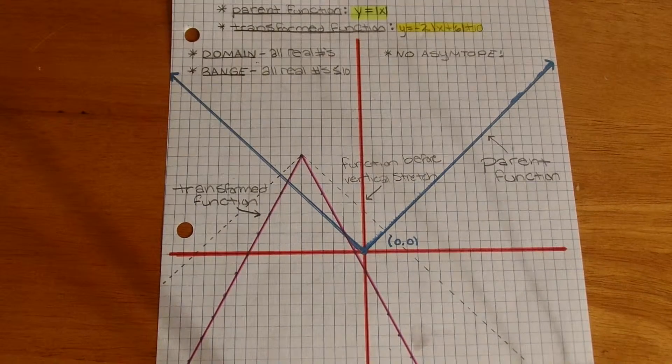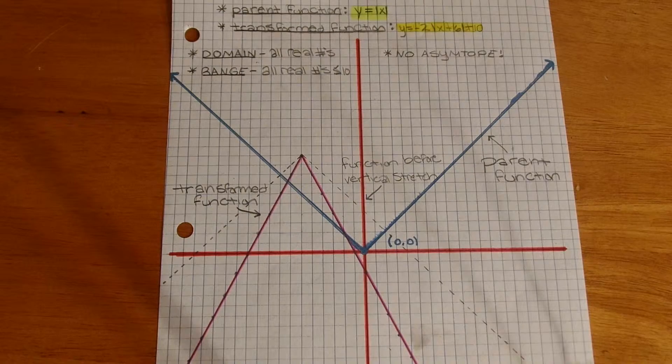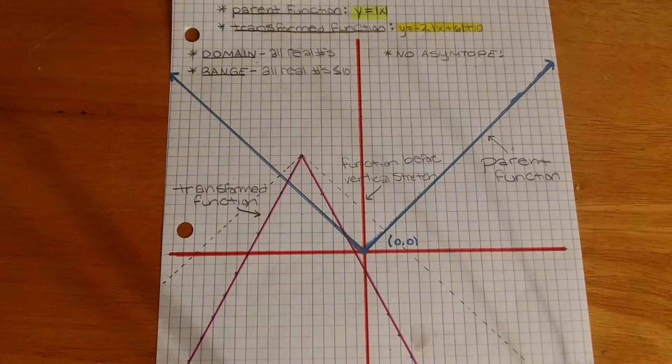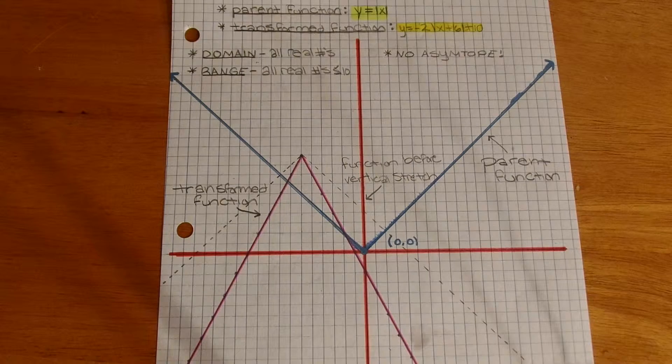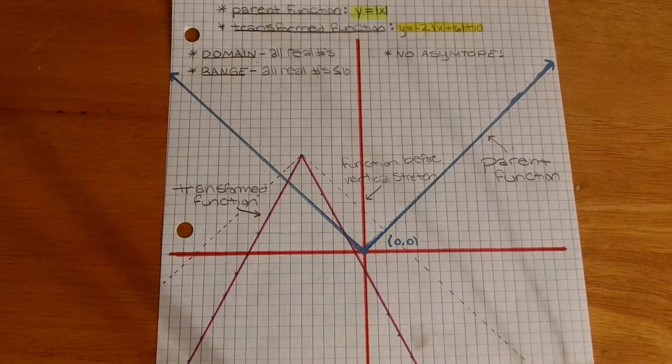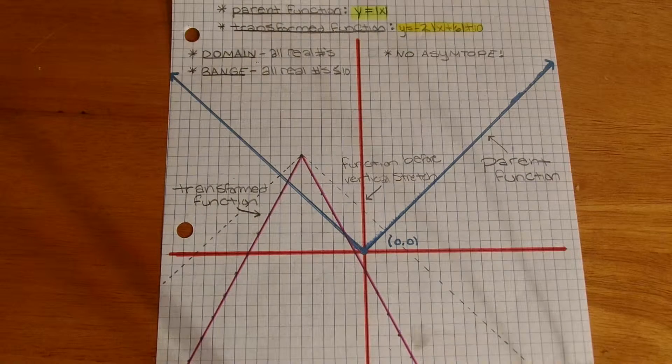For transforming the parent function y equals the absolute value of x to the transform function y equals negative 2 absolute value of x plus 6 plus 10, first you just want to worry about translating the function's origin up and down and left or right.